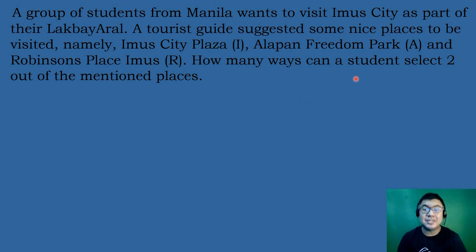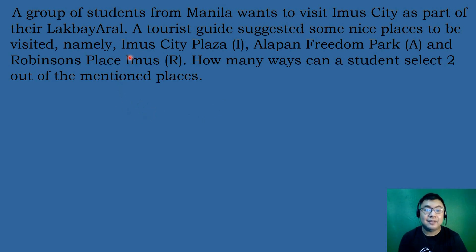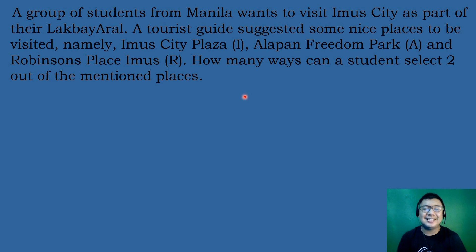The students will select two out of the three mentioned places. In this problem, the order is not important. Whether they select Imus City Plaza followed by Alapan Freedom Park, or Alapan Freedom Park followed by Imus City Plaza — order does not matter. Therefore, this is an example of combinations.